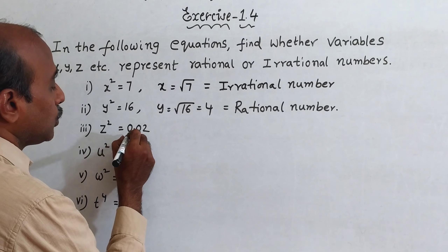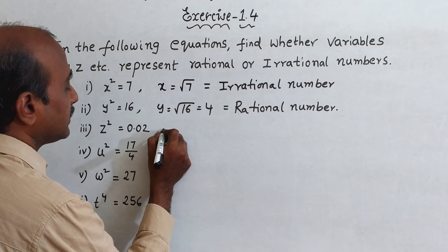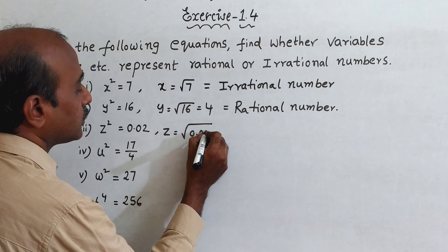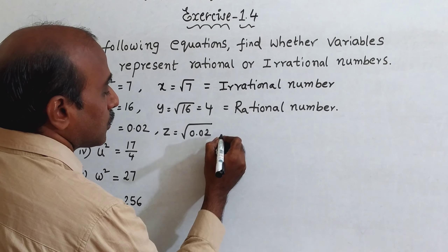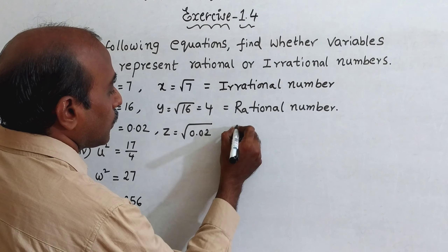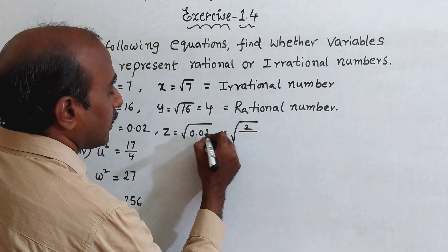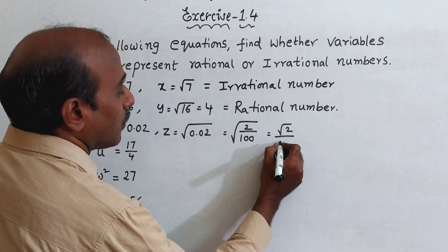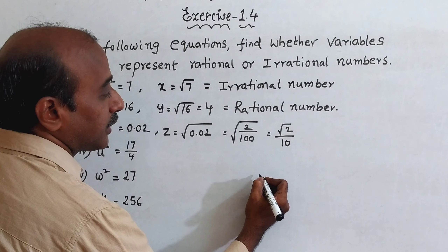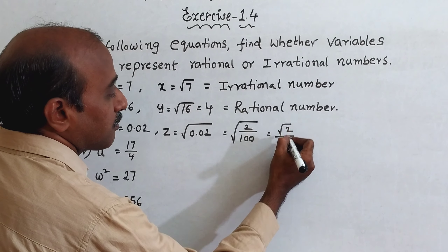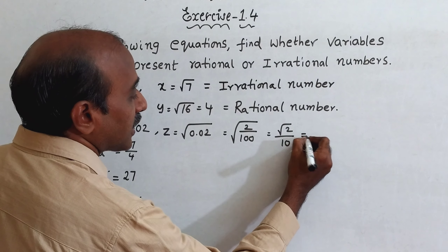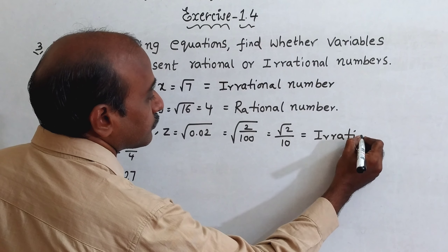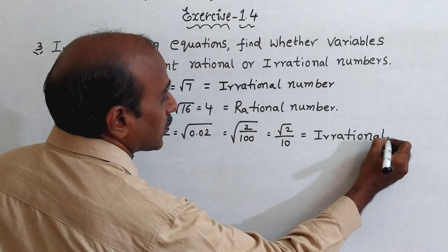Third one: z squared is equal to 0.02, so z is equal to under root of 0.02. You can write this as under root of 2 by 100, which gives root 2 by 10. Since root 2 is irrational, irrational divided by rational is irrational — so this is an irrational number.